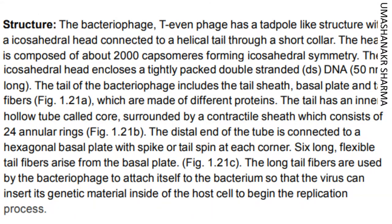The bacteriophage T-even phage has a tadpole-like structure with an icosahedral head connected to a helical tail through a short collar. The head is composed of about 2,000 capsomers forming icosahedral symmetry. The icosahedral head encloses a tightly packed double-stranded DNA, 50 nm long. The tail of the bacteriophage includes the tail sheath, basal plate, and tail fibers, which are made of different proteins.